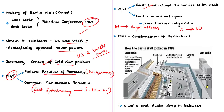Hence, people from East Berlin tried to cross over to West Berlin illegally. To prevent this cross-border movement, the East German government, with the support of the USSR, constructed the Berlin Wall, which completely separated East and West Berlin. The Berlin Wall was not one wall but two; from the diagram, these walls were separated by a heavily guarded minefield of land known as the 'death strip.'